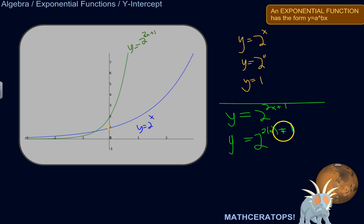2 times 0 plus 1. So 2 times 0 is 0, plus 1 is 1. This equals 2 to the power of 1, which equals 2. So the y-intercept is y equals 2, which you can see visually.